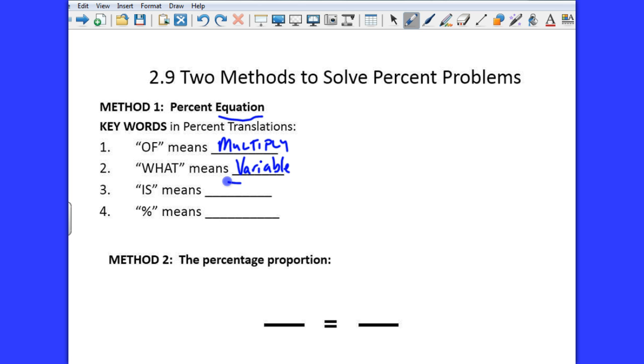'Is', if you hear 'is', that's an equal sign. Again, not always, but most of the time, the word 'is' represents an equal sign. And then the percent, that just means out of 100. So if you know those key words, we can just use those key words, translate it into a math equation and solve. It's easy. That's the first method.